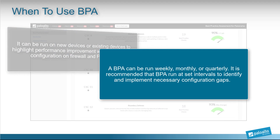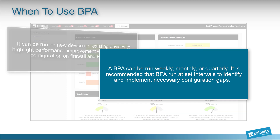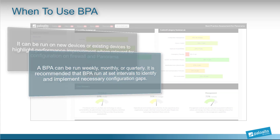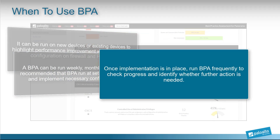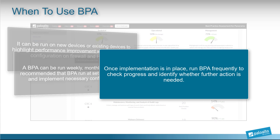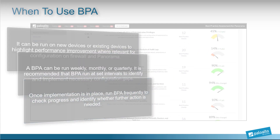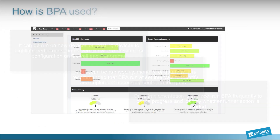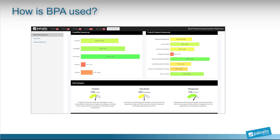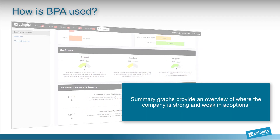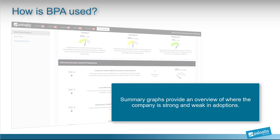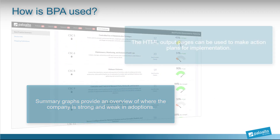It is recommended that the BPA be run at several intervals to identify and implement necessary configuration gaps. Once implementation is in place, running best practice assessments frequently checks on the progression, as well as identifies any further actions that need attention. When reading the best practice assessment results, the best place to start is by looking at the summary graphs. The graphs provide an overview of where the company is strong and where they are weak in their adoptions, which can help focus the security implementation.